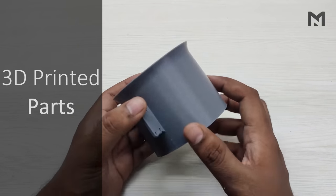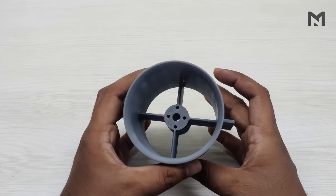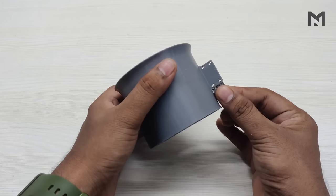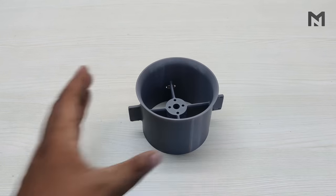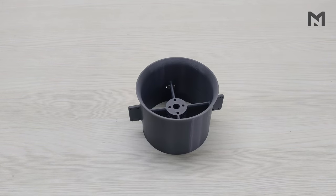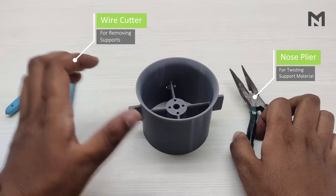First I will remove all these supports which were generated during the printing. Start with the easiest support which can be removed by twisting. Now for the complex support use a set of nose pliers and a wire cutter.